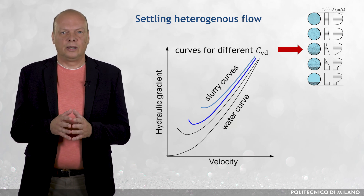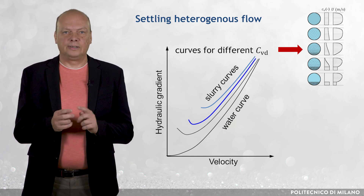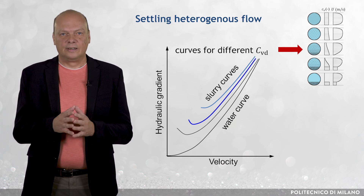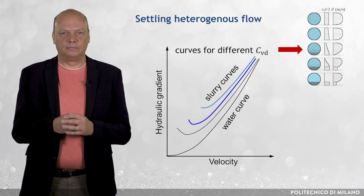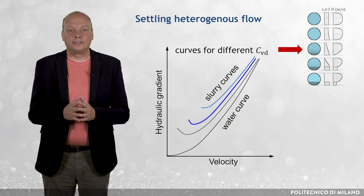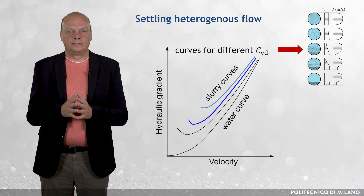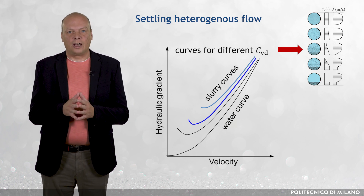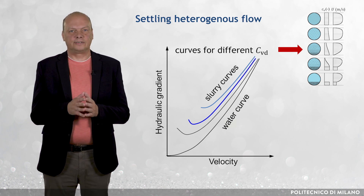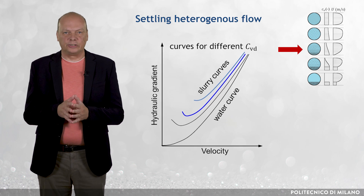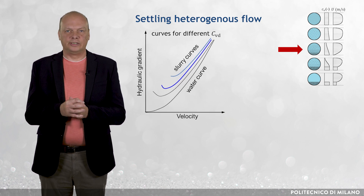The presence of the minimum on a pipe curve has consequences for the interaction with the pump characteristic curve, and hence for stability of operation of the pump-pipeline system. Note that if the flow velocity increases, the pipe curve tends to the curve of the carrying liquid, indicating that the contribution of solids to the total pressure gradient decreases with increasing velocity. This is due to the decreasing proportion of contact load particles with the increase of velocity in heterogeneous flow.